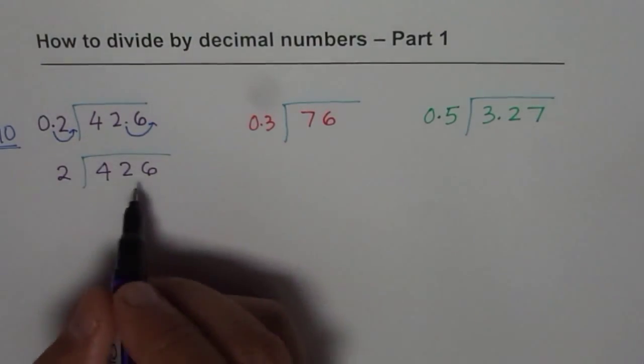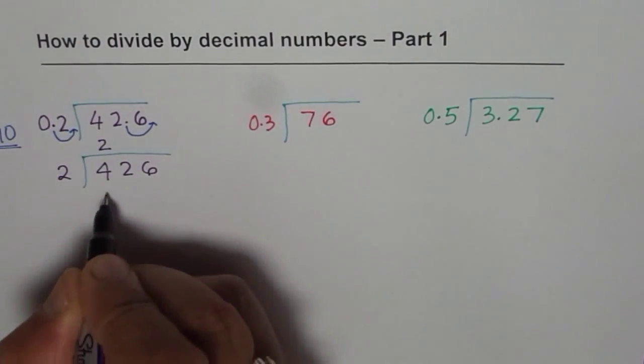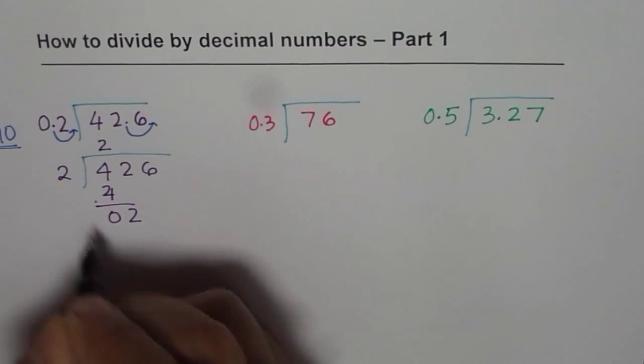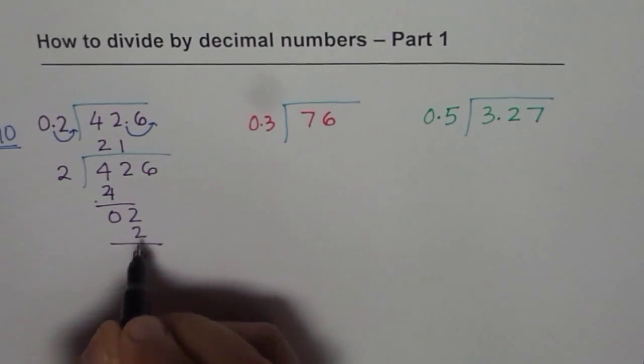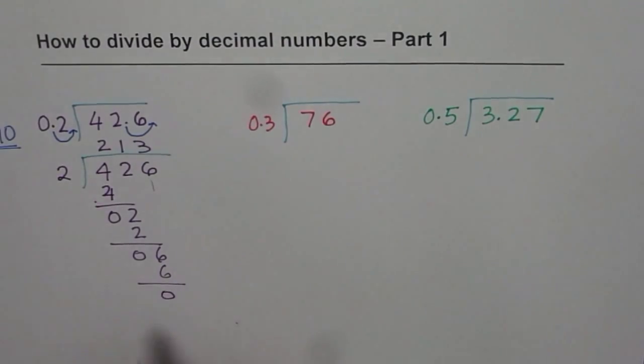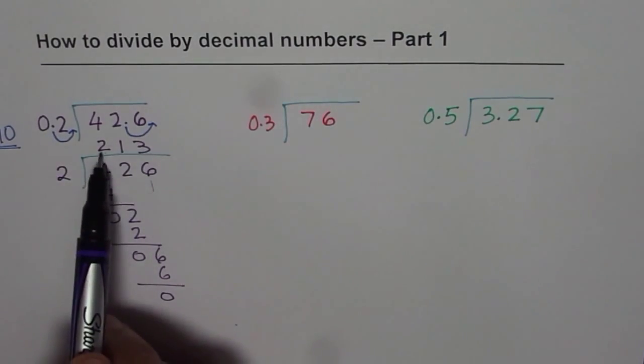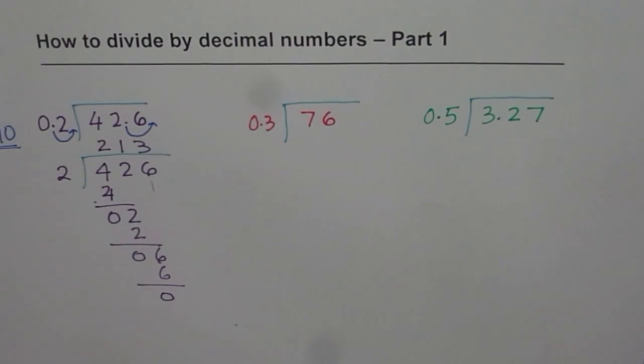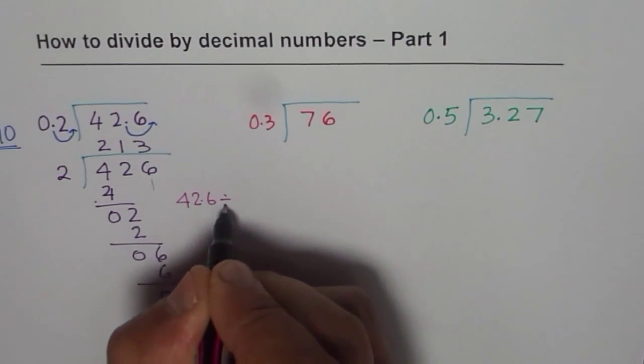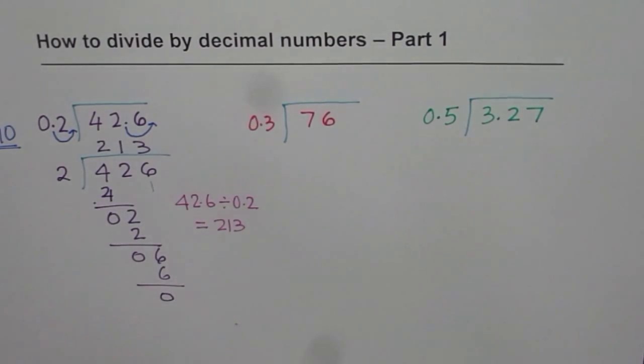Do you get that part? So let's divide now, normal division. 4 is 2 times 2 is 4, so we can write 2 on the top. So we get 2 times 2 as 4, and when you take away you get 0. Bring down the next number which is 2. 2 will go one time, in 2 again it is 0. Bring down the next number which is 6 which goes 3 times, so 2 times 3 is 6, remainder is 0. So we know 42.6 divided by 0.2 is 213. So that is our answer. So we can write down that 42.6 divided by 0.2 is equal to 213. So that is the first one.